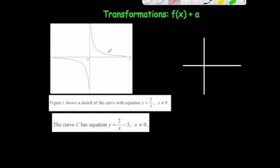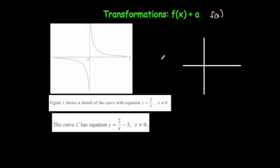The last exam question: you've got a reciprocal graph y = 2/x, and the question asks you to sketch the curve y = 2/x − 5. This doesn't use f(x) notation directly, but you can see that the function is 2/x and you're subtracting 5 from it. So what's going to happen is the graph moves five squares down.